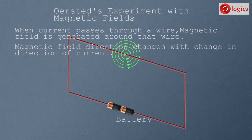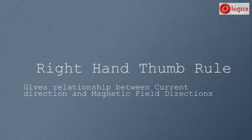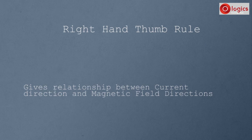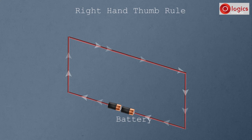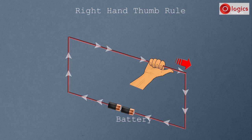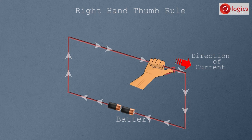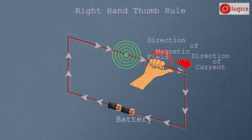The right-hand thumb rule gives the relationship between current and field directions. Let's understand the right-hand thumb rule. This is a basic electric circuit with current passing in this direction. With the right hand, hold the wire such that the thumb faces the direction of current flow. The direction of the thumb represents the direction of current. The remaining fingers wrap around the wire, and the direction in which they curl gives the direction of the magnetic field around the wire.